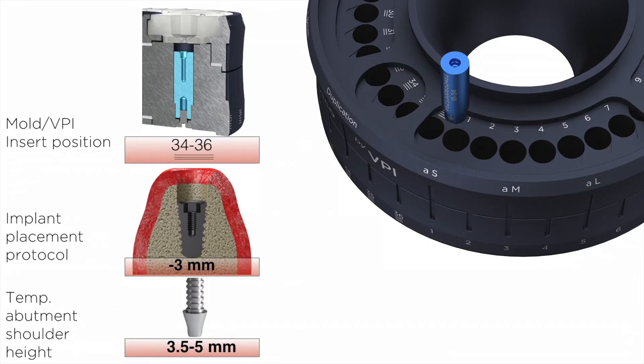Sockets 34 to 36 will receive the VPI prosthetic connection insert being three millimeters sunk into the socket. This is useful if your implant placement protocol involves three millimeter sub-crestal placement.